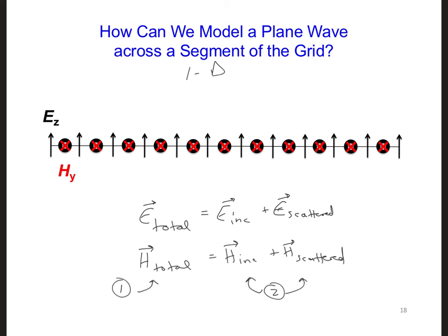E inc and H inc in one calculation and then E scattered and H scattered in the separate calculation. And then we can add the two results together and they should be equivalent. So, how can we use this to our advantage? Spend a minute and think about how we might numerically incorporate a plane wave into a segment of our one-dimensional FDTD model.